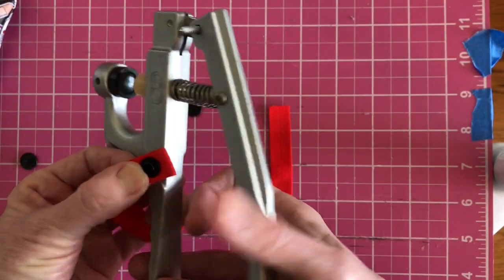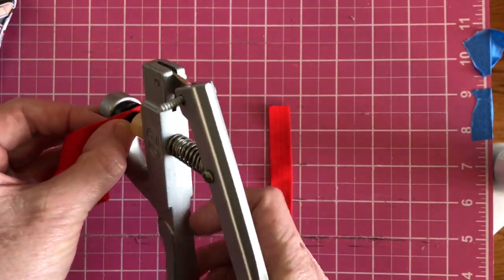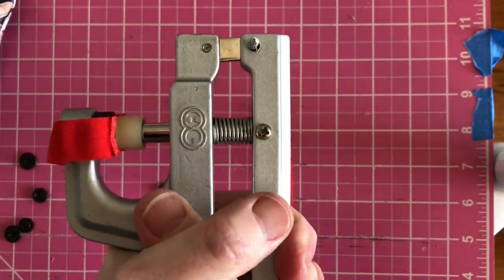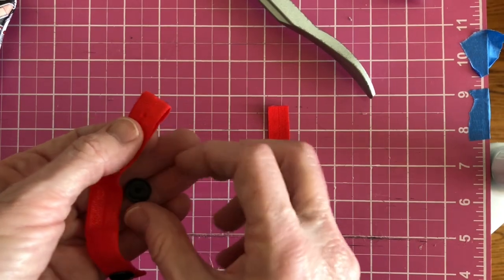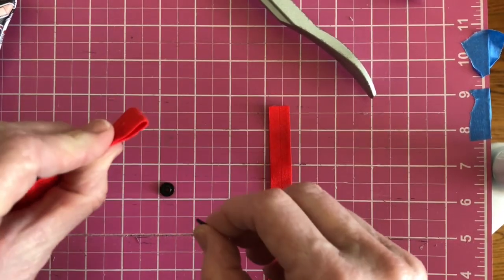Use a hand or press snap setter to crimp the snap set onto the strap. Do this on the opposite end of the strap using the male or female snap piece not used in the first.